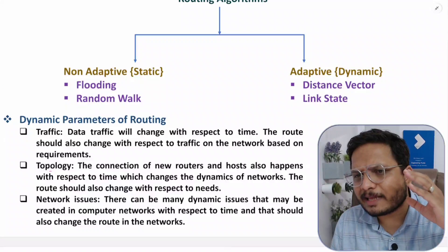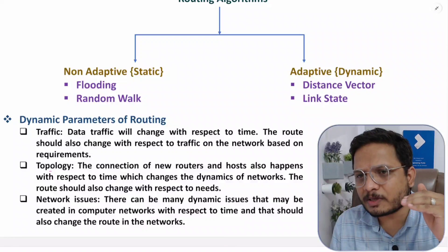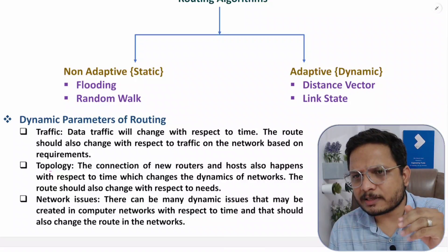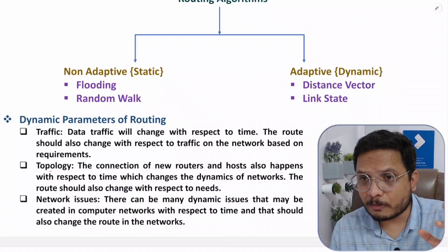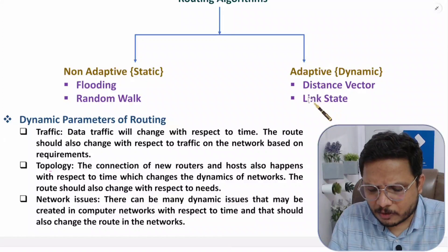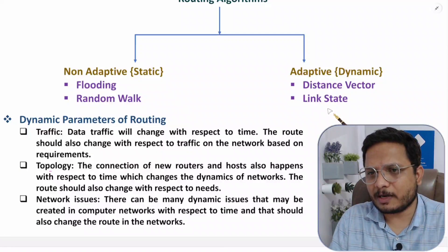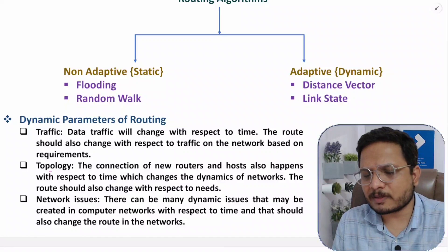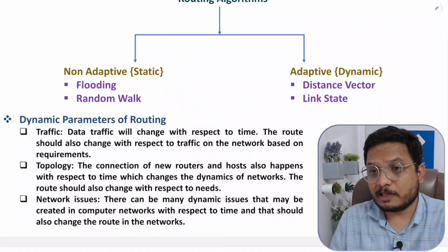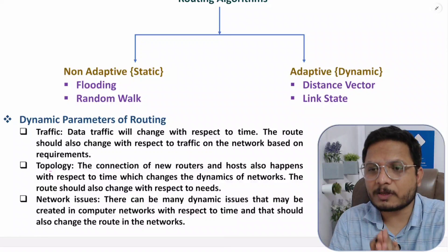Practically, we are currently using the link state algorithm. The distance vector algorithm was used way back in the 1990s with the ARPA network and the US defense sector up to the early 2000s, but now across the entire globe, adaptive algorithms are used for routing. That is all about non-adaptive algorithms. From the next video onwards, I'll start with adaptive algorithms. If anything is unclear, please note it down in the comments — I'll be happy to help. Thank you for watching.